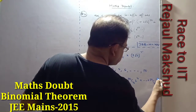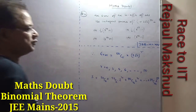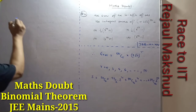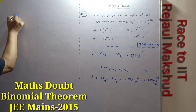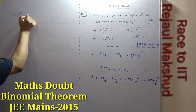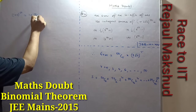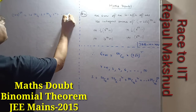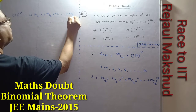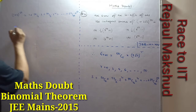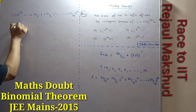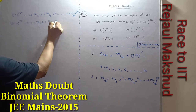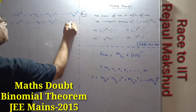Continuing the sum: ...up to 50C50·2^50. Now consider (1+√2)^50, which gives 50C0 + 50C1·√2 + 50C2·2 + ... + 50C50·2^25. And (1-√2)^50 gives 1 - 50C1·√2 + 50C2·2 - ... + 50C50·2^25.